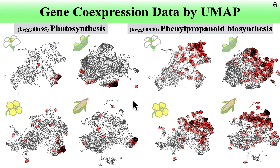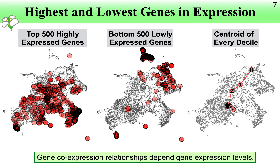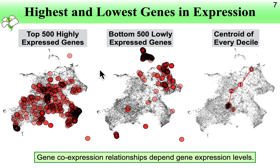However, when using this UMAP representation, we found potential biases related to the expression level of genes. This is a map for Arabidopsis. When we plot the top 500 highly expressed genes, they are distributed across the map. On the other hand, when we plot the bottom 500 lowly expressed genes, those genes accumulate in the upper right region. These distributions are apparently different, indicating that expression levels are strongly linked to co-expression relationships, and especially lowly expressed genes tend to be co-expressed with each other.